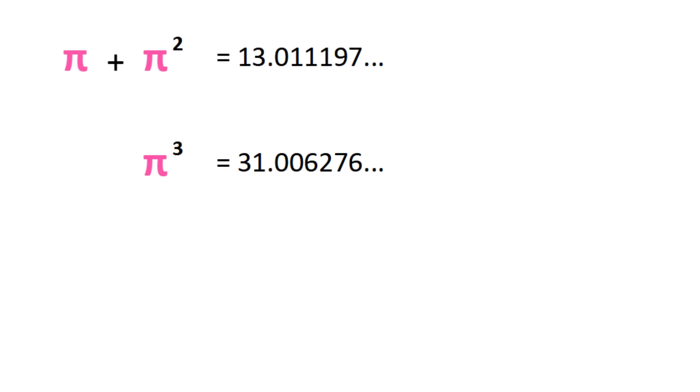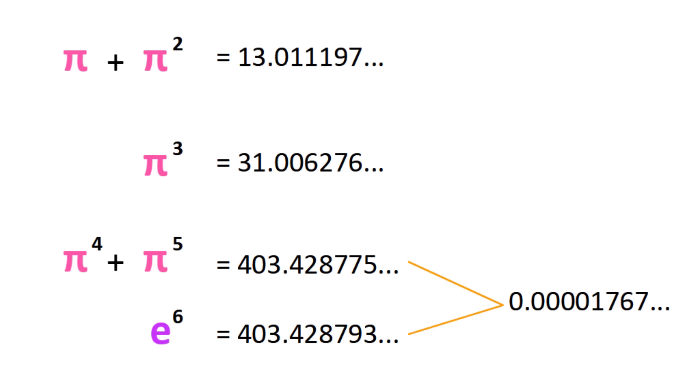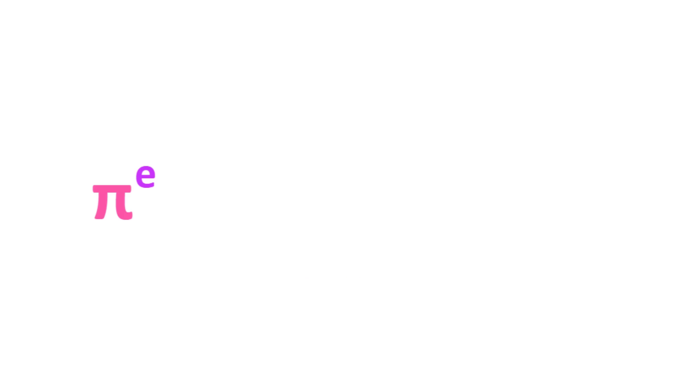Then fourth and fifth powers, pi to the fourth plus pi to the fifth isn't near an integer, but it is approximately e to the sixth, and the difference between them is less than 0.00002.